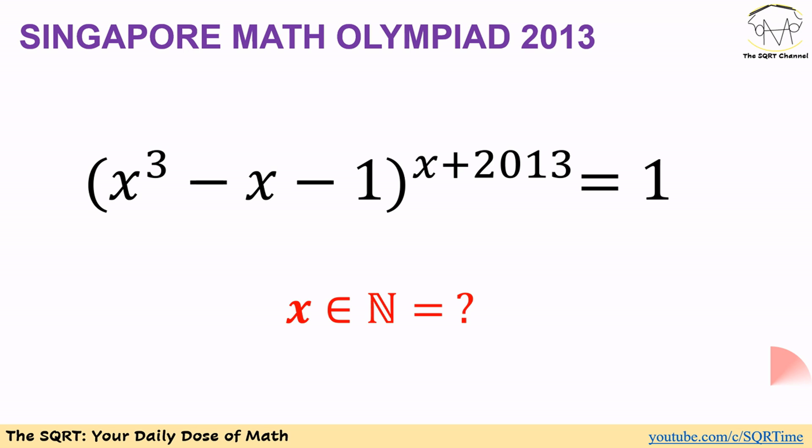In this problem we have an equation and we want to solve it in natural numbers. The equation includes x³ - x - 1 for the base and x + 2013 for the power, so we have (x³ - x - 1)^(x+2013) = 1.